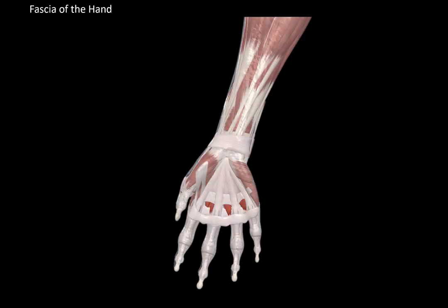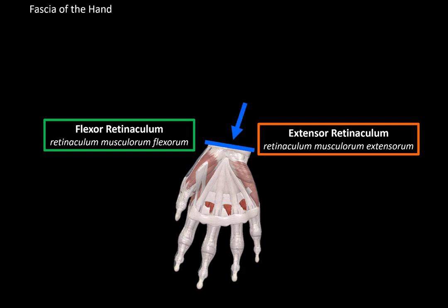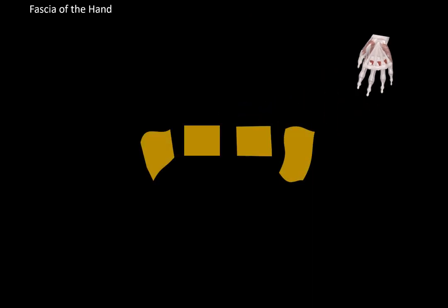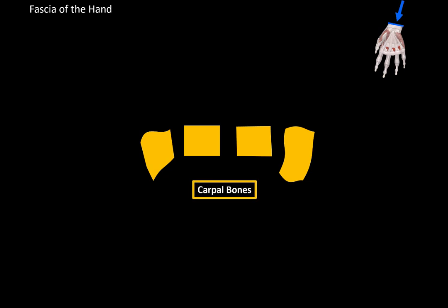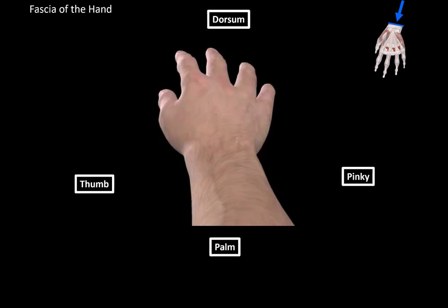To understand the flexor and extensor retinaculum, let's make a transverse cut and look at the cross section from the wrist. We will see the distal row of carpal bones: the trapezium, trapezoid, capitate, and hamate. For orientation, the thumb is on one side, the pinky on the other, the dorsum of the hand is here, and the palm is here. Adding structures: under the skin, we have the extensor retinaculum and then the flexor retinaculum, both forming compartments. The extensor retinaculum forms 6 canals for the tendons of the extensor muscles.